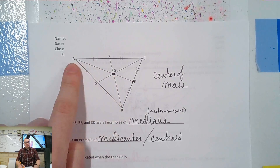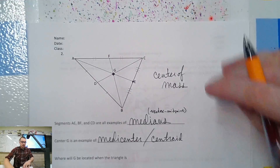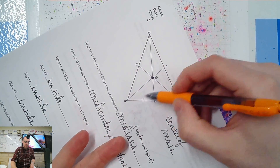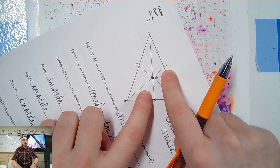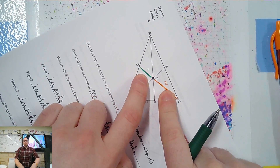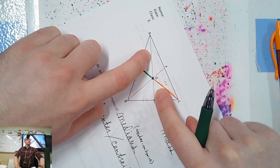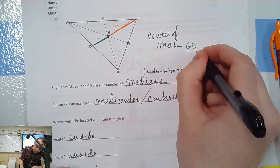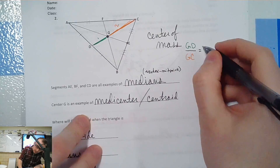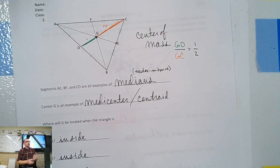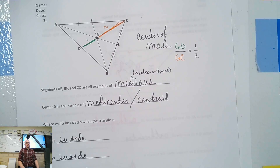G cuts the medians into two pieces, and those two pieces are related in a special way — we learned about this last week. This will always be twice as big as this. So if that's 2, this would be 1. Same thing for this one: if that's 6, that would be 3. If that's 8, this would be 4. So you can write that GD over GC equals 1 versus 2. That's always true with the medians and the medi-center — it cuts the medians into two pieces, one twice as big as the other.